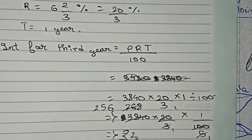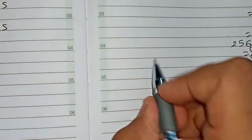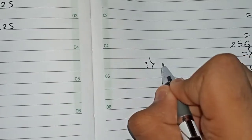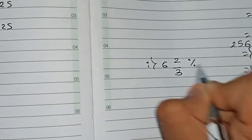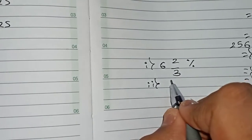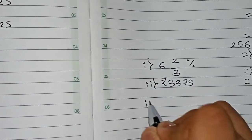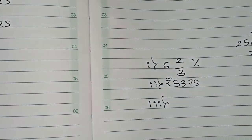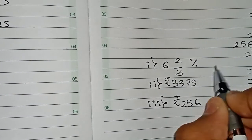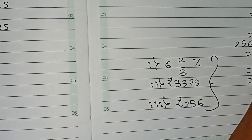To summarize the final answers: (1) Rate of interest = 6⅔%; (2) Original principal = ₹3375; (3) Interest for the third year = ₹256. Thanks for watching this video — please subscribe to my channel for more solutions.